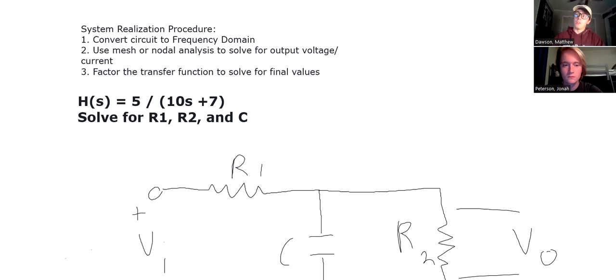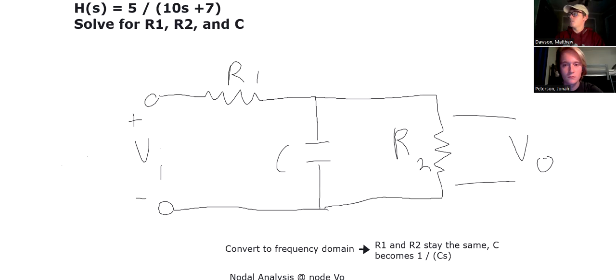So to start off with, our transfer function, h of s, is equal to 5 over 10s plus 7. And we are asked to solve for r1, r2, and our capacitor value for students. So you see this is the circuit that we came up with. Jonah, take it away.